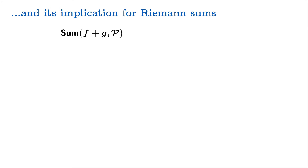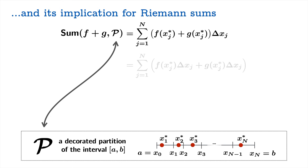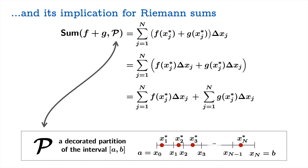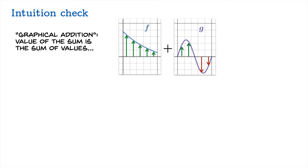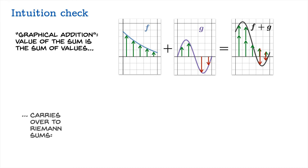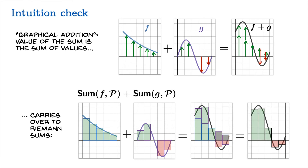So what does this imply for Riemann sums? We have our partition p, which if written out explicitly looks like a sum over subintervals. We can distribute the Δxⱼ in each term and then split the sum apart using the previous result. That means when we take the Riemann sum of the sum of functions f and g, it can be written as the Riemann sum of f plus the Riemann sum of g. Intuitively, you're adding the box heights for f and g at each argument, so the Riemann sums add together exactly as the functions do.